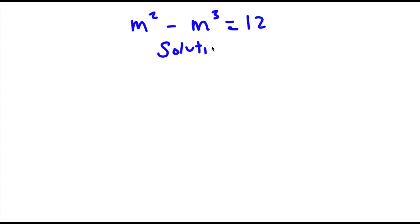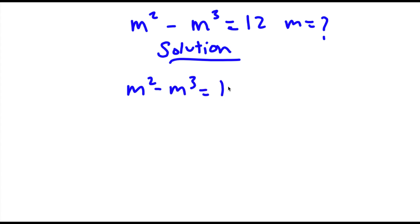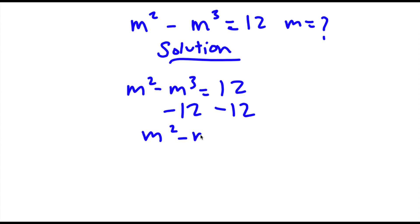For our solution we want to find the value of m. We start with m squared minus m to the power of 3 is equal to 12. Now I'm going to subtract both sides by 12, so now I have m squared minus m to the power of 3 minus 12 is equal to 0.